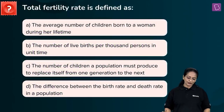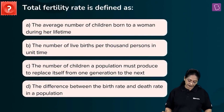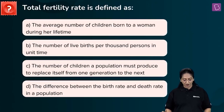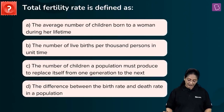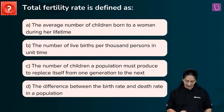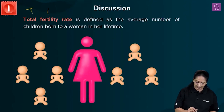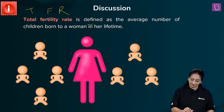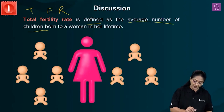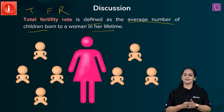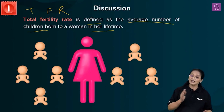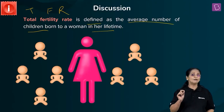A new question: Total fertility rate is defined as — A. The average number of children born to a woman during her lifetime. B. The number of live births per thousand persons in unit time. C. The number of children a population must produce to replace itself from one generation to the next. D. The difference between the birth rate and death rate in a population. TFR — total fertility rate — is defined as the average number of children born to a woman during her lifetime of childbearing years.